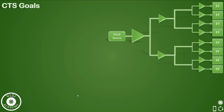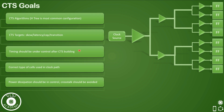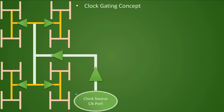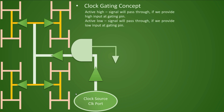Before we start discussing further, here are the topics we covered in the previous video. To summarize, we talked about CTS algorithms, CTS targets, timings, and challenges such as power dissipation in the clock tree. To solve the power dissipation problem, we discussed that it can be controlled using clock gates. Active high clock gates let the signal pass through if the gating input is high, and active low lets the signal pass if the gating input is low.